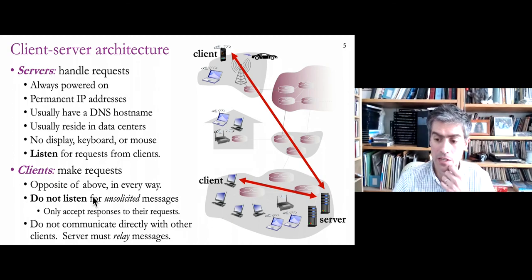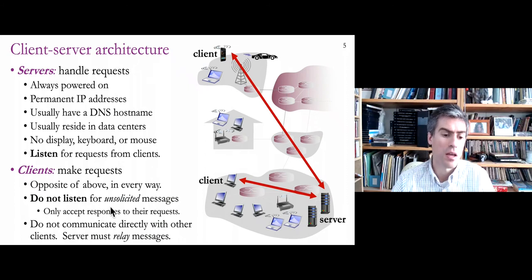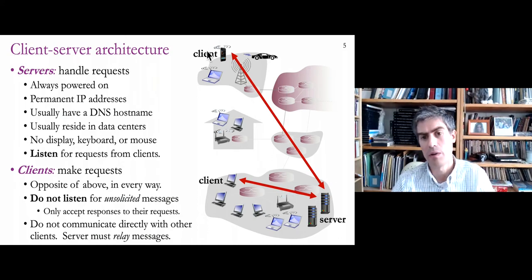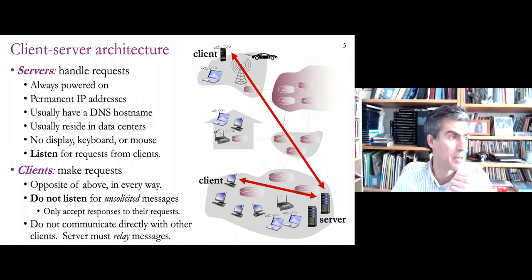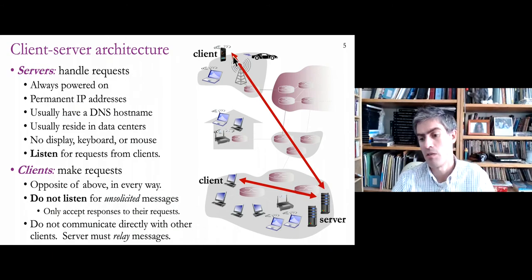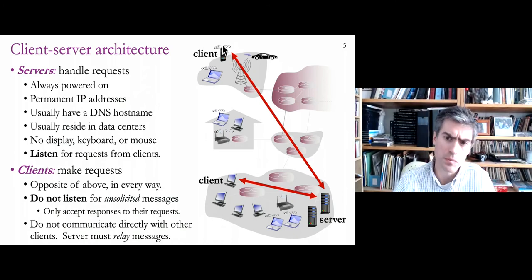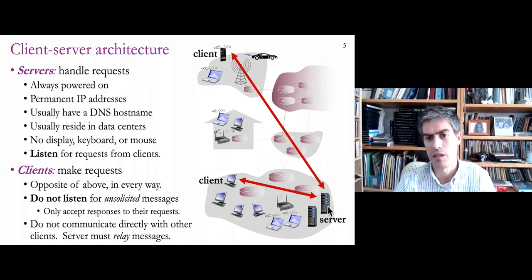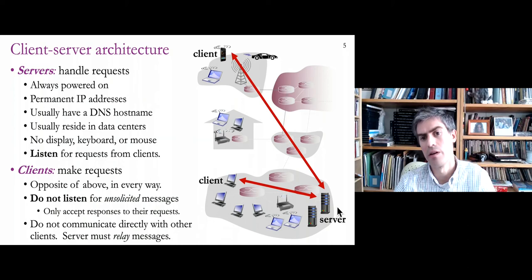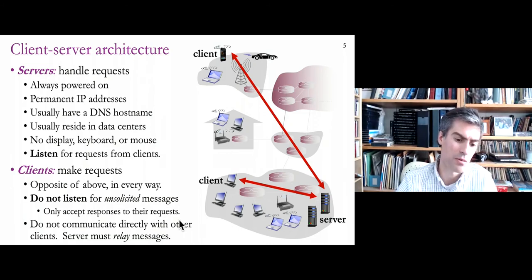Clients are the opposite of servers in basically every way — they don't handle requests, they make requests. They don't listen for messages; they send them. A client might be running a mail application where you fetch messages — that's a request sent to the server asking 'get my messages,' and the server sends the data back. Clients only listen for messages coming back from a server they recently contacted. They do not listen for unsolicited messages — only responses to their own requests.